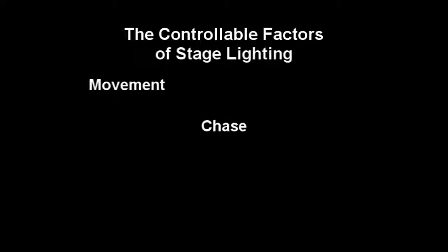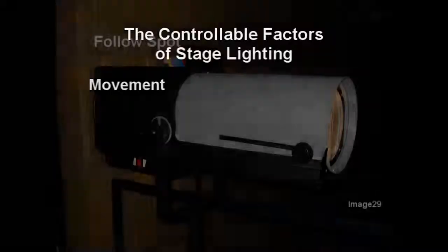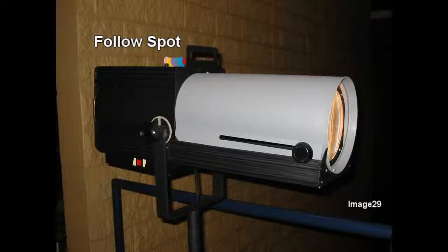A special effects version of this movement is referred to as a chase. This occurs when the intensity of lights are increased from one area to another in rapid succession — you may have seen this done at dance clubs. Another traditional way in which light can move is through an instrument referred to as a follow spot. The follow spot is an instrument that sits on a stand and can pivot and move with a moving object on stage, most often used in a musical to highlight the singer as they move from one part of the stage to another.